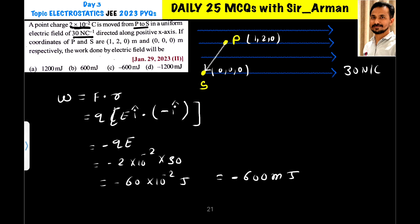If coordinates of P and S are 1, 2, 0 and 0, 0, 0 meter respectively, the work done by electric field is calculated as follows.